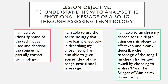Once you're able to do this, the yellow box in the middle — you should be able to use the terminology that you have learned effectively in describing your chosen song. You are also able to give some idea of the song's emotional message, so you're really showing a good understanding of the terminology and how to use it to describe a song, and you're also starting to give some description of the emotional message, but it's not fully there yet — it's just the overall idea rather than using each bit of terminology to really describe the song.